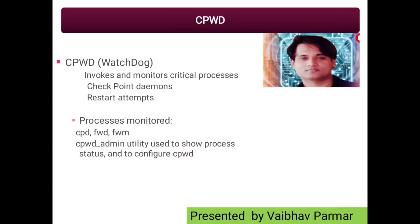The functionality of the security gateway is implemented both in user mode and kernel mode. Since the security gateway is the first and foremost network device running an OS, it is inherently vulnerable to various network layer attacks. To mitigate this risk, some firewall functionalities are implemented at the OS level, allowing traffic to be inspected before reaching the OS or the IP stack. These processes are useful to handle and inspect the traffic.